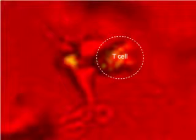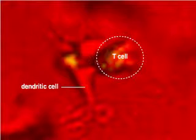In this video, we can see a T cell that becomes activated when it interacts with the dendritic cell. The T cell is labeled with a dye that fluoresces when it binds calcium ions.